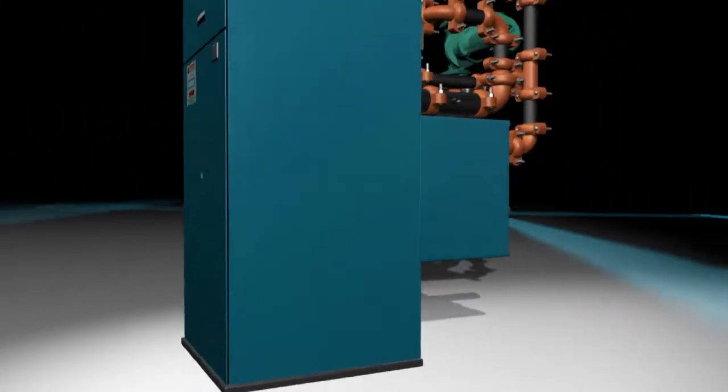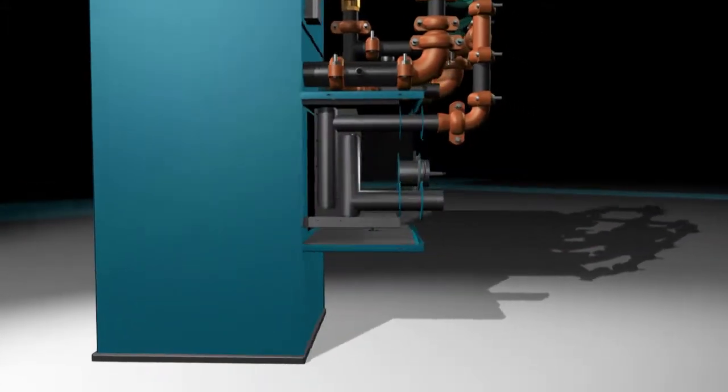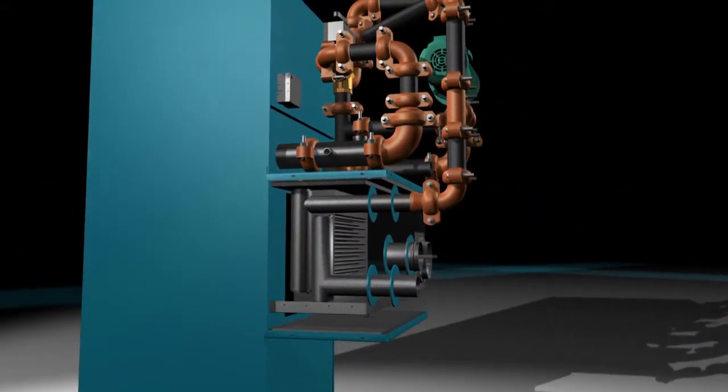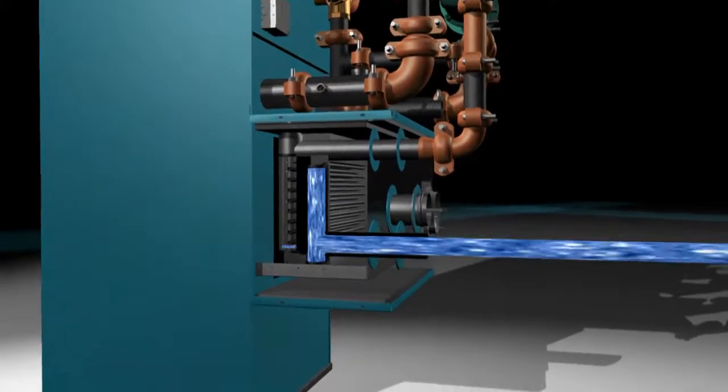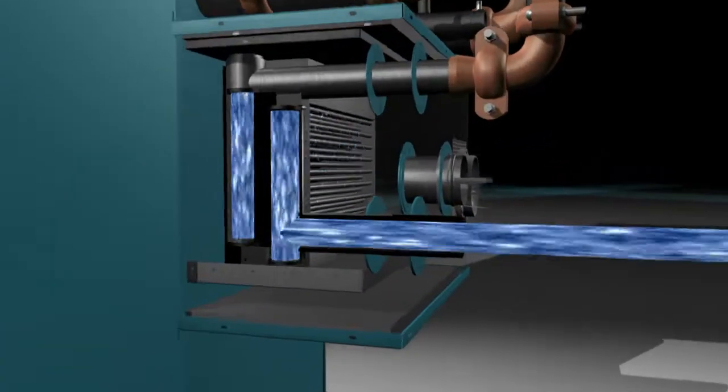The condensing unit is comprised of a stainless steel heat exchanger and mixing loop arrangement. Water returning from the system enters the secondary heat exchanger, comprised of stainless finned tubes.